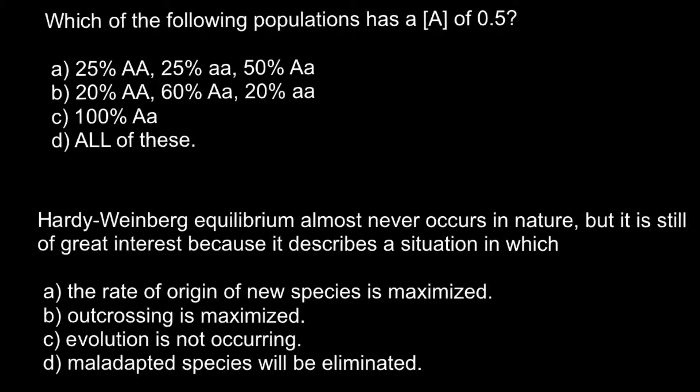Which of the following populations has dominant allele A with a frequency of 0.5? Here are four answers to choose from. Let me explain how we are going to calculate frequencies. When we have three genotypes...